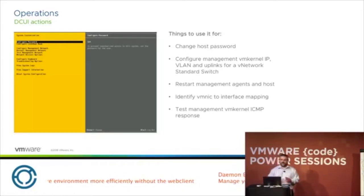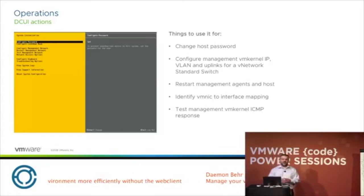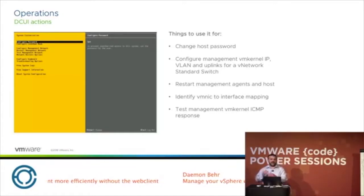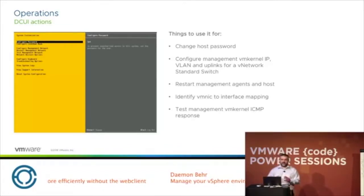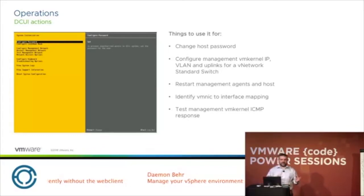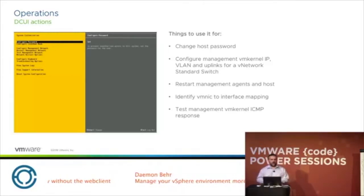One other thing the DCUI is very good at — which you can't do with some other interfaces — is if you have a number of different uplinks and need to determine how they're actually enumerated on the host. You can plug in a cable, go into the DCUI, and look to see what has been connected and what vmnic has been enumerated to that specific uplink. Often if you have many uplinks, they won't necessarily enumerate exactly the same even on two identical hosts, so this is a great way to verify which uplinks correspond to which interface.